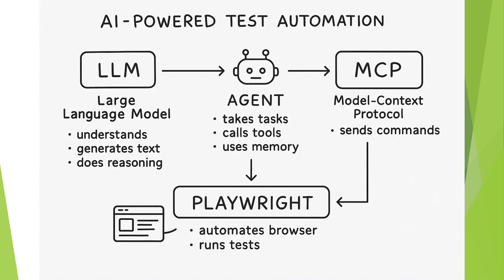MCP also handles structured communication. It relies on the browser's accessibility tree — a map of UI elements — rather than raw screenshots, so the LLM can precisely identify buttons and fields on your web page, making instructions reliable and fast. To restate this in one line: MCP enables an LLM or agent to control a Playwright-managed browser using structured commands.